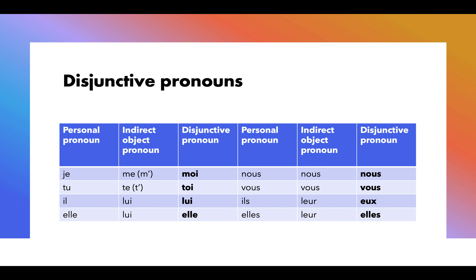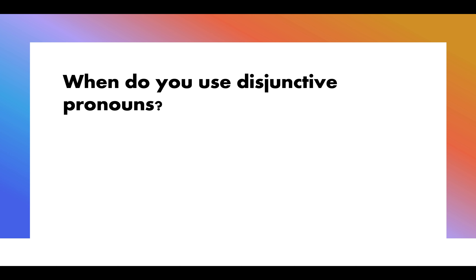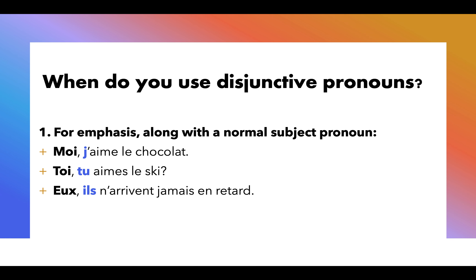So we're looking at disjunctive pronouns: moi, toi, lui, elle, nous, vous, eux, elles. We need to figure out when to use them. Now I'm going really fast — you're going to need to push pause a thousand times in order to take good notes. So when do we use them? In the first place, we use them for emphasis along with a normal subject pronoun.